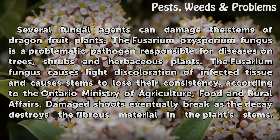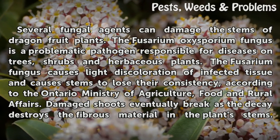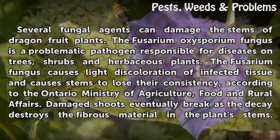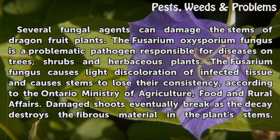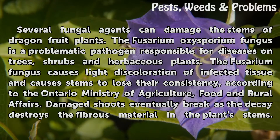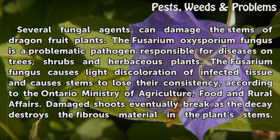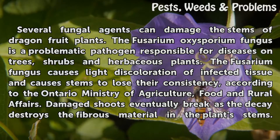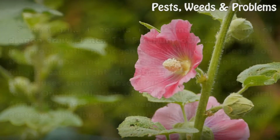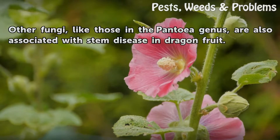Several fungal agents can damage the stems of dragon fruit plants. The Fusarium oxysporum fungus is a problematic pathogen responsible for diseases on trees, shrubs, and herbaceous plants. The Fusarium fungus causes light discoloration of infected tissue and causes stems to lose their consistency. According to the Ontario Ministry of Agriculture, Food and Rural Affairs, damaged shoots eventually break as the decay destroys the fibrous material in the plant stems.